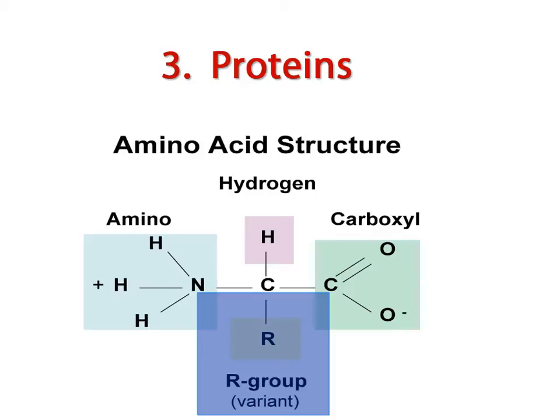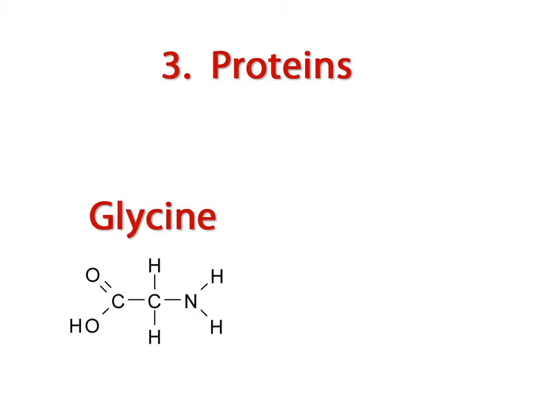For example, the R group could just be a hydrogen atom, and in that case we have the amino acid glycine.